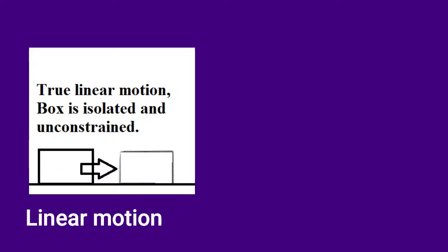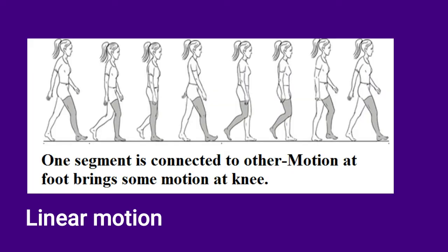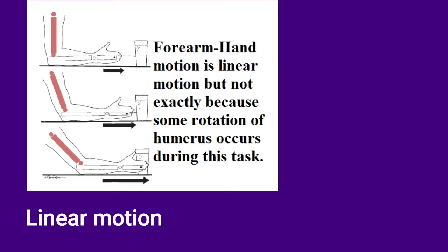Let's consider linear motion in a little detail. True linear motion is one that happens in a straight line, and the segment is isolated and unconstrained, like a box moving over a surface. But in humans, such motion is not possible because every segment is connected to another, so motion of one segment will show motion at another even if it is not visible. When you reach out to grasp an object, the forearm-hand movement can be called linear motion, but not true linear motion, because the forearm-hand segment is connected to the humerus, and as your hand moves to grasp, there is a small amount of rotation at both shoulder and elbow joints even if it is not visible to your eyes.